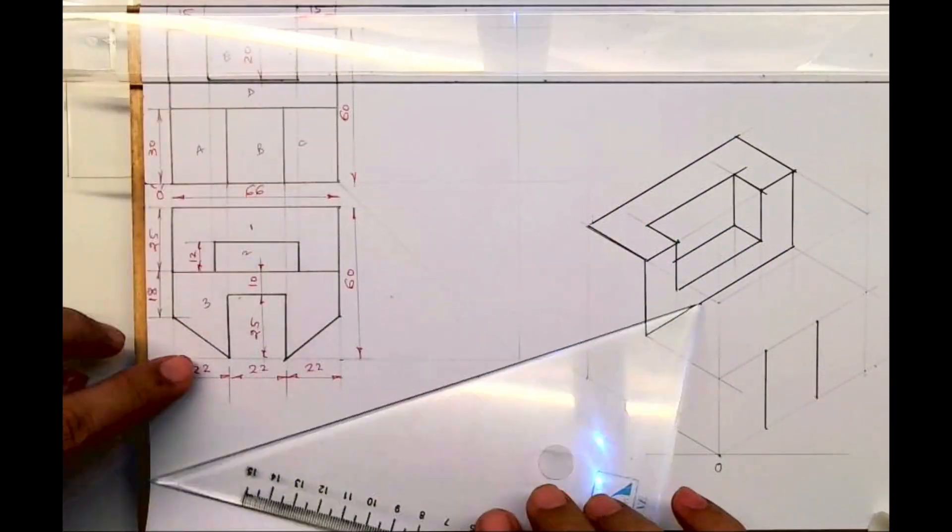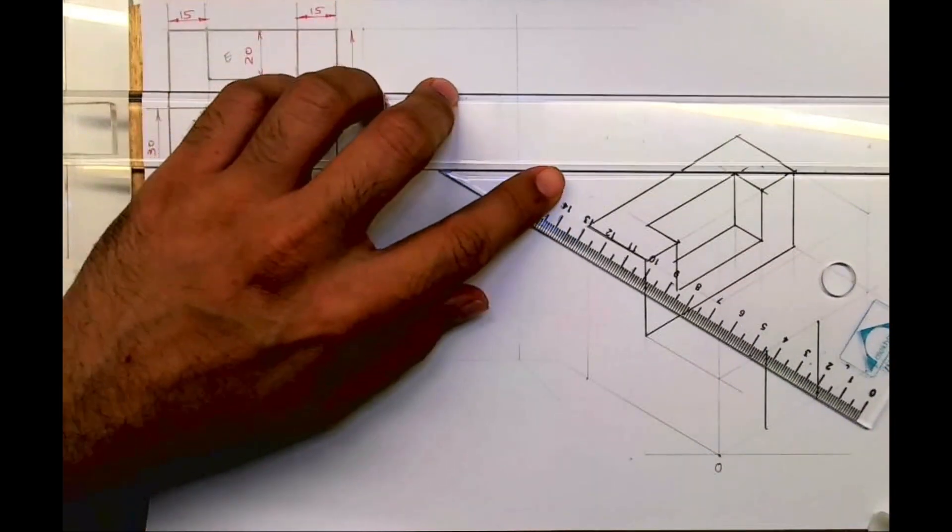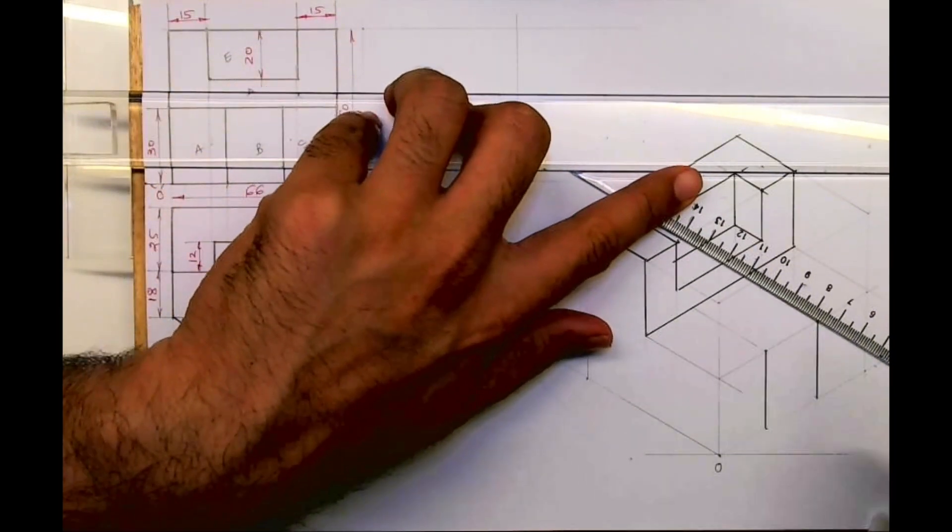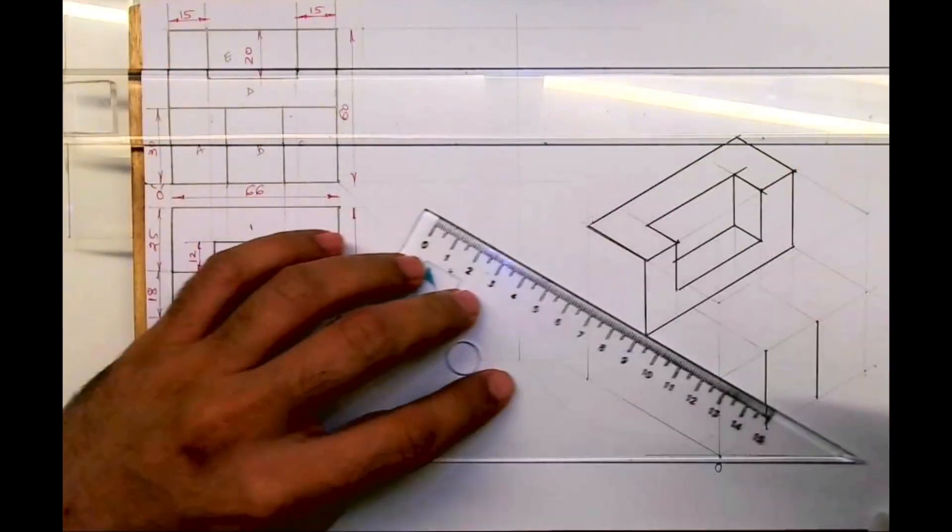Now first we will draw how it looks in top view, so we'll go inside by 25.